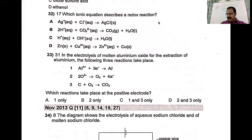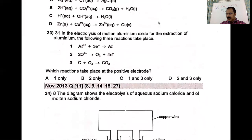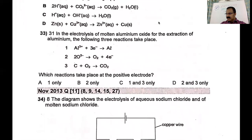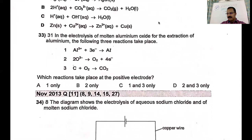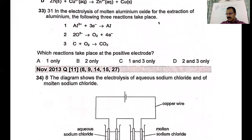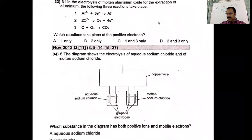In the electrolysis of molten aluminum oxide for the extraction of aluminum — this question has appeared for the third time. The answer doesn't change — reactions two and three occur at the anode.